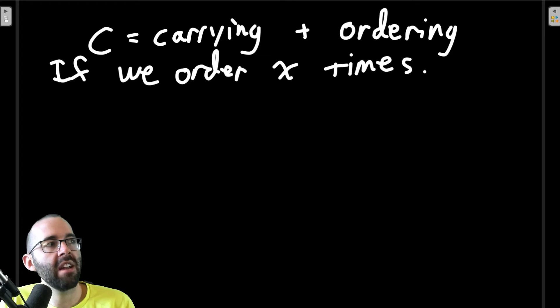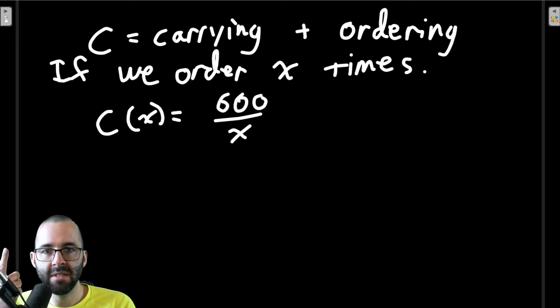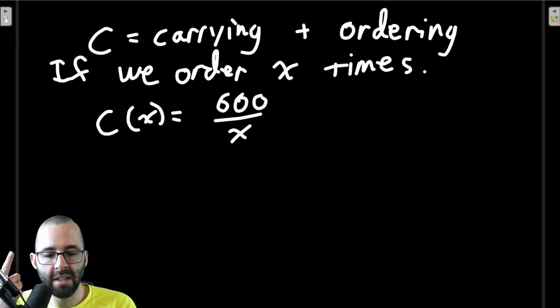So we already calculated the carrying costs from Example 1. Our cost function C(x), in Example 1 we said it was 600 divided by x, we got this from Example 1. If we ordered once in Example 1 we got that the cost was times 8.